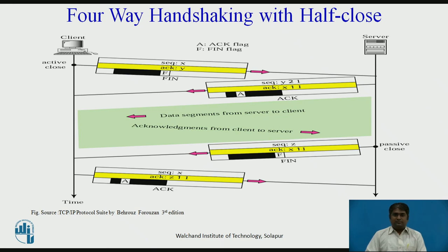Four-way handshaking — that is, half-close. In TCP, one end can stop sending data while still receiving data; this is called half-close. Either the server or the client can issue a half-close request. It can occur when the server needs all the data before processing can begin. A FIN plus ACK segment consumes one sequence number if it does not carry data.